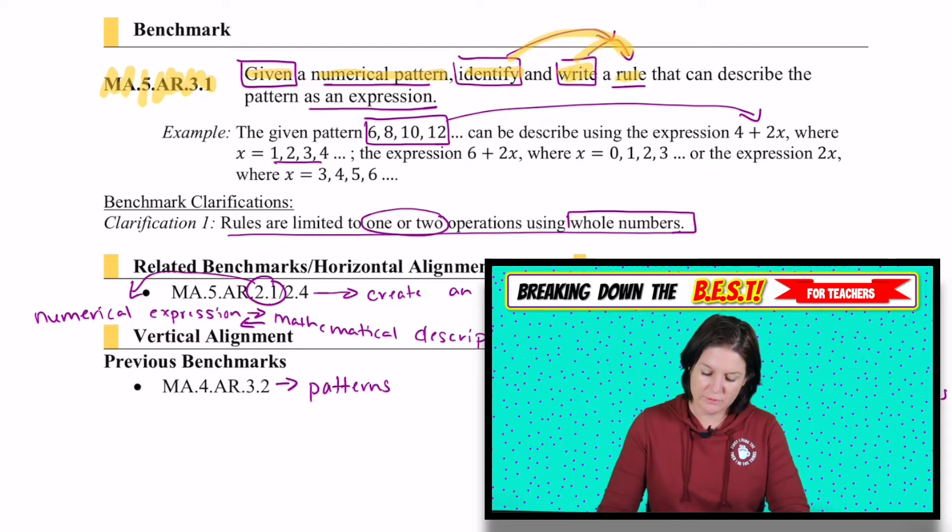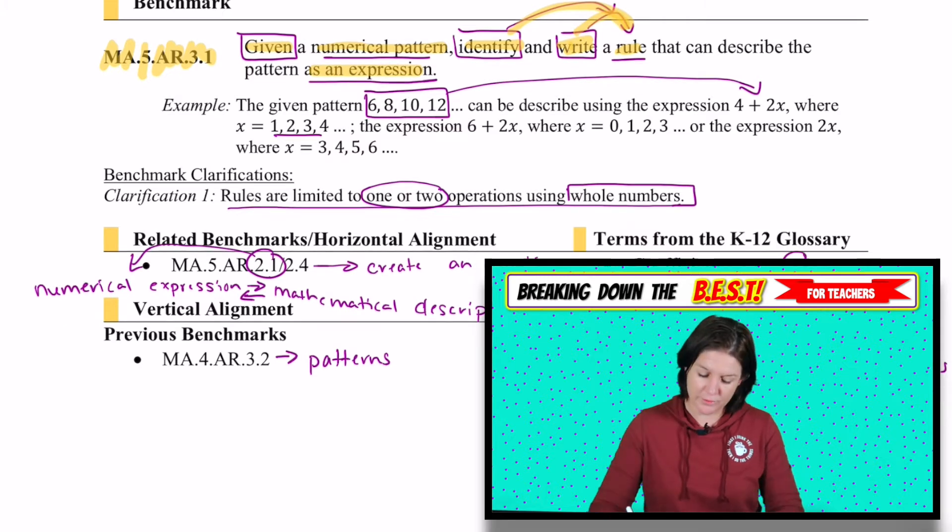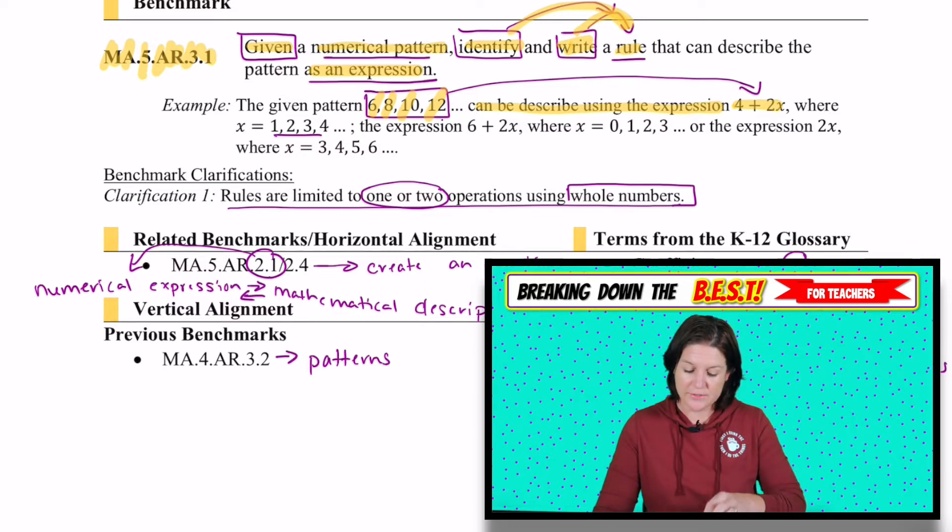So I'll have to identify and write a rule that can describe the pattern as an expression. Okay, for example, the pattern given is 6, 8, 10, and 12. And it can be described using the following expression, which is 4 plus 2x, where x is the term of the pattern.